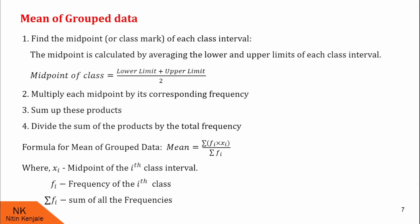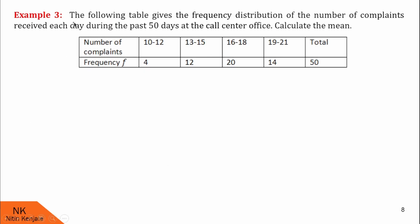Let us understand this with an example. The following table gives the frequency distribution of number of complaints received each day during the past 50 days at a call center office. We are asked to calculate the mean number of complaints. The number of complaints are grouped class-wise: 10–12, 13–15, 16–18, and so on, with frequencies 4, 12, 20, and 14. The sum of all frequencies is 50. Since this is grouped data, we use mean = Σ(fᵢxᵢ) / Σfᵢ, meaning we first calculate the midpoint of each class interval, multiply by the corresponding frequency, and add up all products to get Σ(fᵢxᵢ), then divide by Σfᵢ = 50.